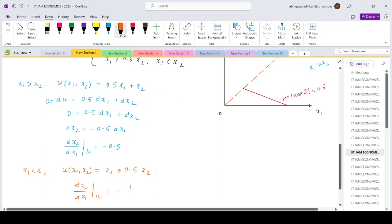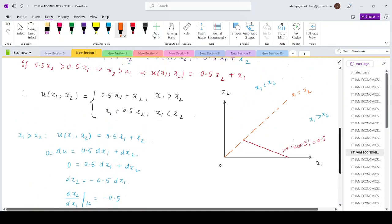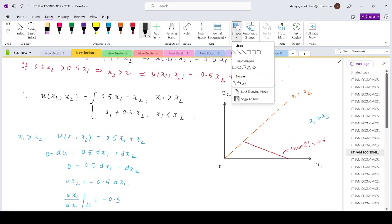So that will give us minus 1 by 0.5, so that is minus 2. So that means the upper part, the line would be slightly steeper something like this. So this part the absolute slope is 2, and this is my indifference curve.